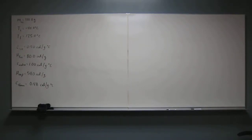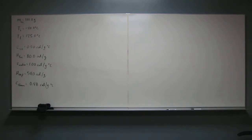Let's try this problem. This one is a more involved problem — you actually have a lot of calculations to do in this one. It says: calculate the heat required to convert 100 grams of ice at negative 40 degrees Celsius to steam at 125 degrees Celsius.